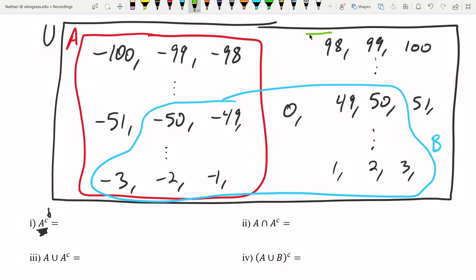So everything that's not in A is going to be the zero and all the positive numbers. I'm going to draw that here in green.